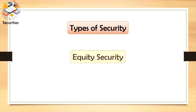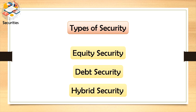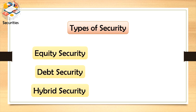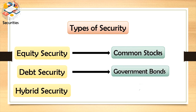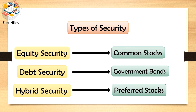There are primarily three types of securities: equity, debt, and hybrid security. Equity securities provide ownership rights to holders, like common stocks. Debt securities are essentially loans repaid with periodic payments, for example government bonds. Hybrid securities combine aspects of debt and equity, like preferred stocks.